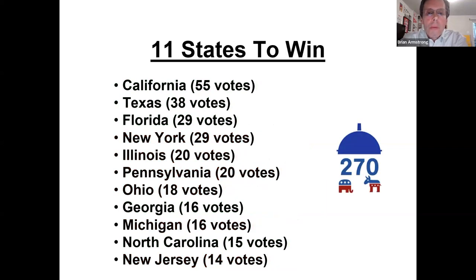Looking at the states that typically represent a win for the president, most winners have these 11 states. These are the battleground states you'll see popping up — Florida, Ohio, Michigan, and North Carolina will definitely be in the mix. These are ones with double-digit electoral vote amounts, significant enough to make a difference in getting to 270.